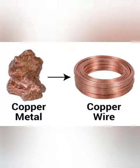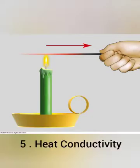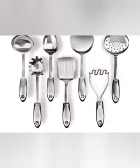Next is heat conductivity. Metals are very good conductors of heat, due to which they are used to make utensils. Copper, aluminium, and iron are metals from which we make utensils because of their good heat conductivity.